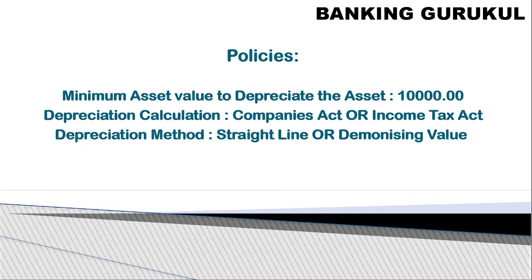We don't need to book depreciation for everything we purchase — for example, one glass for 100 rupees or one spoon for 500 rupees. So we define a minimum value: if I say 10,000 rupees, then any asset valued more than 10,000 rupees will start the depreciation process every year. Whether depreciation is calculated as per the Companies Act or as per the Income Tax Act will be decided by the organization.